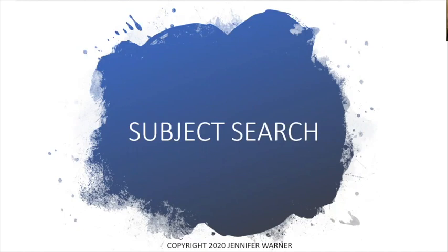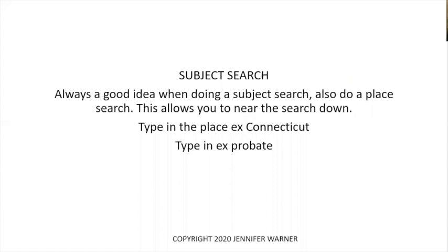Next is a subject search. This is one of two areas people use a lot because they're looking for particular subjects in genealogy — like probate records, church records, birth, marriage, death, land records, and will records. When using FamilySearch, it's always a good idea to also do a place search when doing a subject search. If you just do a subject, it's going to search all 50 states plus the UK, China, Italy, Germany, France — everything internationally. If you limit it to a place as well, it helps narrow your searches down quite a bit.